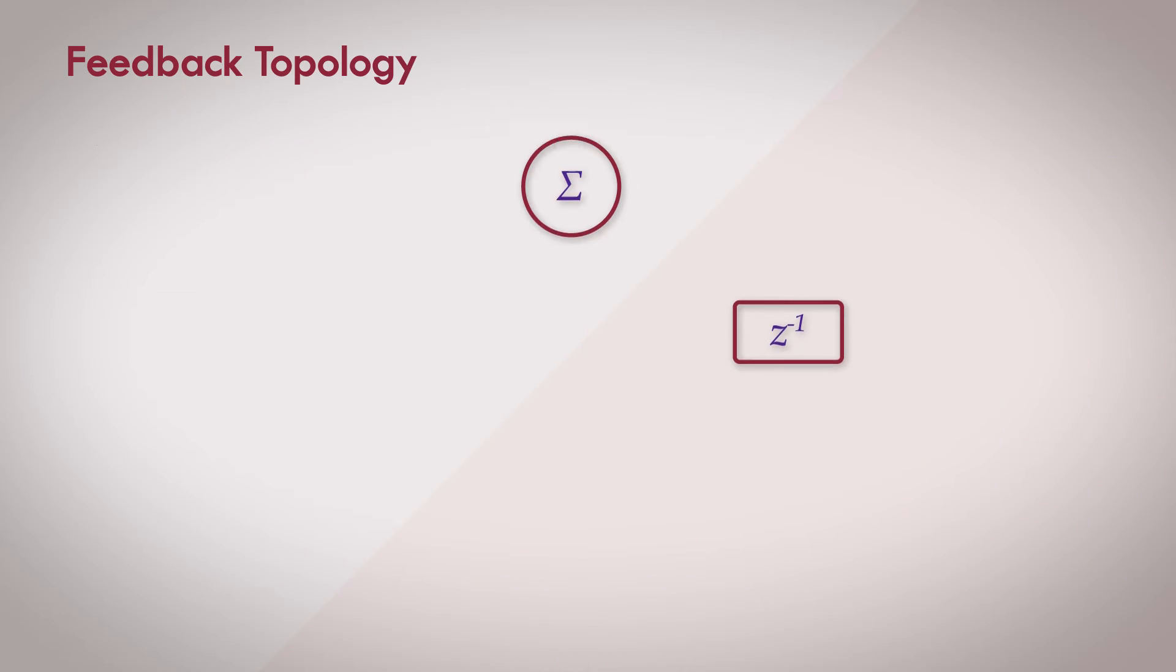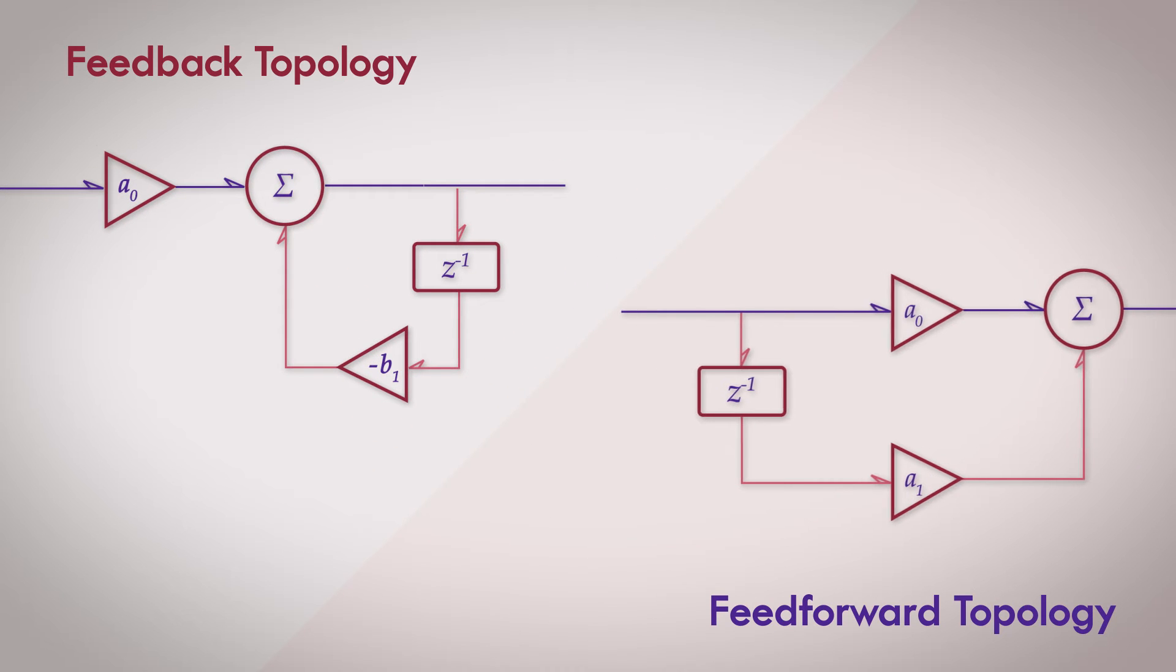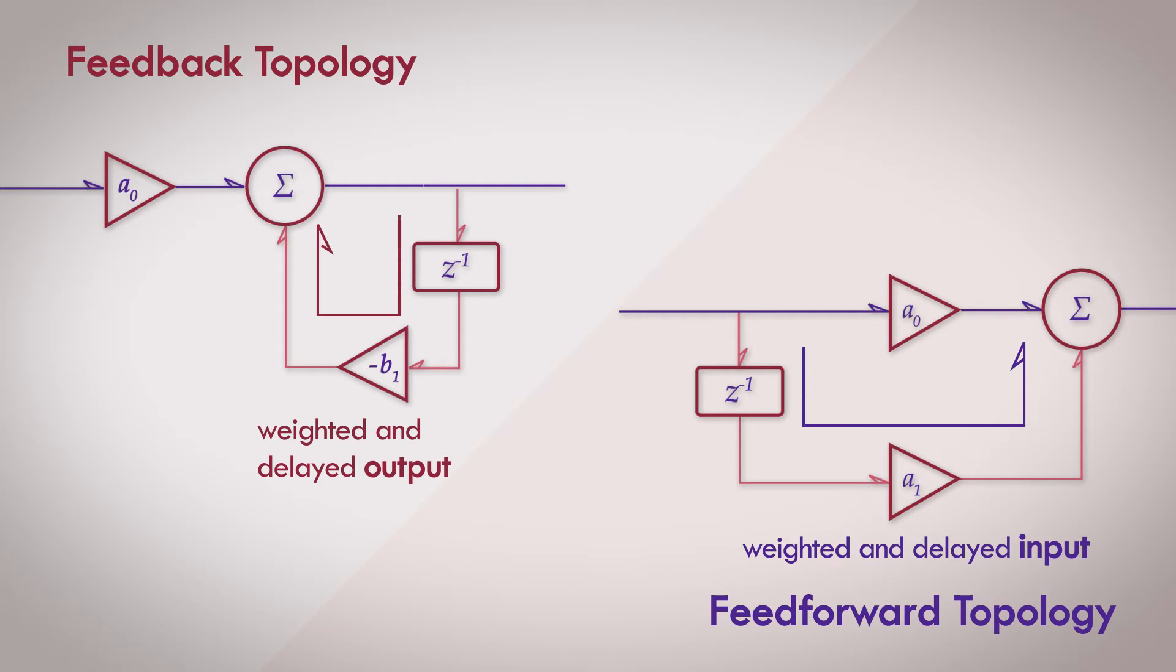Here's a first-order feedback filter. The prime difference between this and the feedforward filter topology is that in the feedforward design, a weighted and delayed part of the input is fed into the system, whereas in a feedback design, a weighted and delayed part of the output is fed back into the system. That's literally what the name says. The signal is feeding back into the filter. It's a good name.